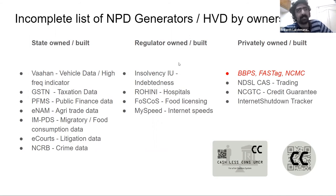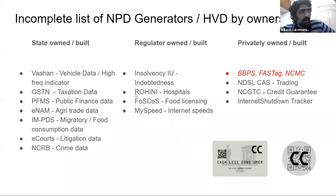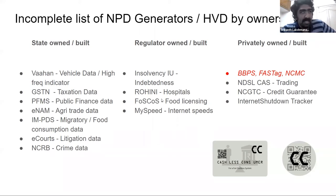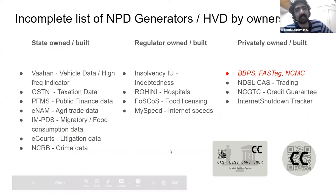A second category is regulator-owned or built datasets. Examples include: the insolvency information utility built and approved by IBBI; Rohini — a database of all hospitals in the country — run by the Insurance Information Bureau under IRDAI; FOSCOS, which has a database of all food licensing data for FSSAI; and TRAI's MySpeed app, which monitors all internet speeds and houses that infrastructure data. These are some of the high-value dataset infrastructures built and owned by regulators.